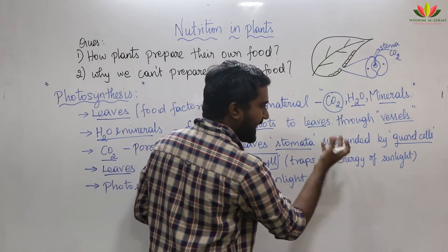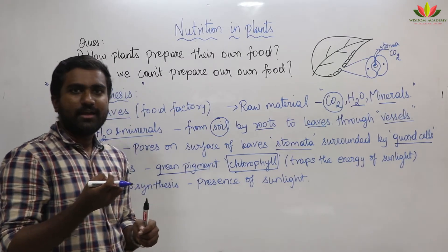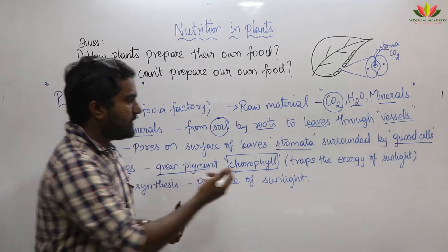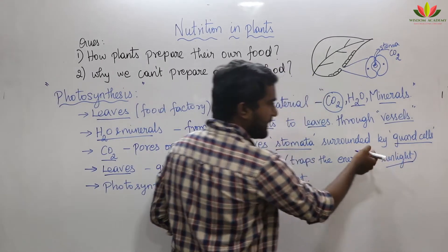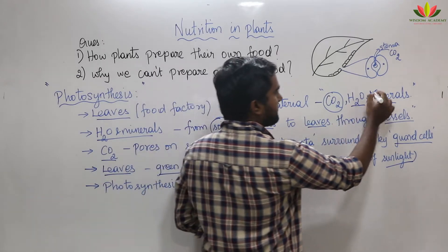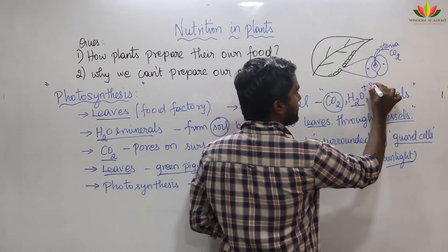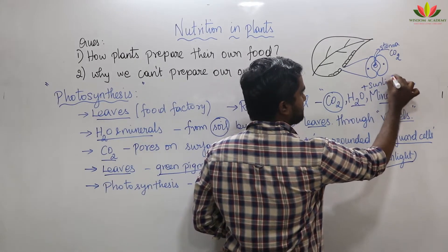The chlorophyll pigment in the leaves will trap the energy of the sunlight. So sunlight is also a raw material needed for photosynthesis. Along with CO2, water, and minerals, you also need sunlight.